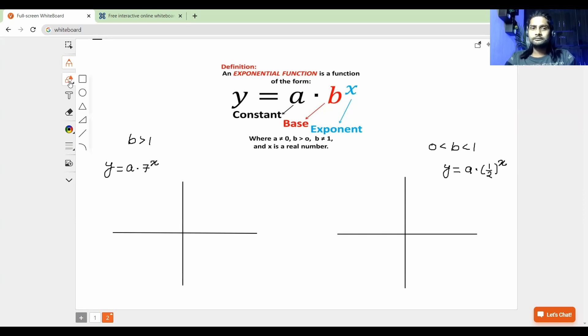So students, whenever the b is greater than one, the function is said to be the growth function, growth exponential function. Its graph looks like this. It extends at both directions, so we just draw these kind of arrowheads. And whenever the value of b is less than one, it's called the decay function. And it looks like this. Now you got the idea how exactly it looks like, an overall idea. What's the growth? Because it grows from left to right. Therefore, it's called increasing or growth function. And when it decreases from left to right, you would say it's a decay function.